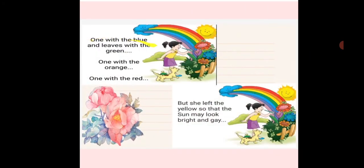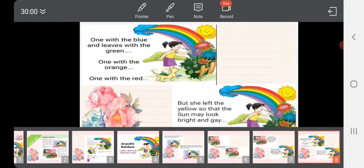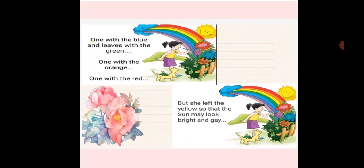She painted one flower with blue, the leaves with green, one with orange, and one with red. But she left the yellow so that the Sun may look bright and gay. So with the beautiful colorful rainbow, she painted the flowers in different colors and the leaves in green.